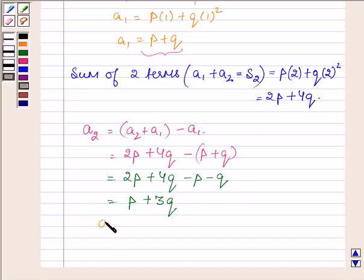So the second term of the AP is P plus 3Q, and the first term is P plus Q.